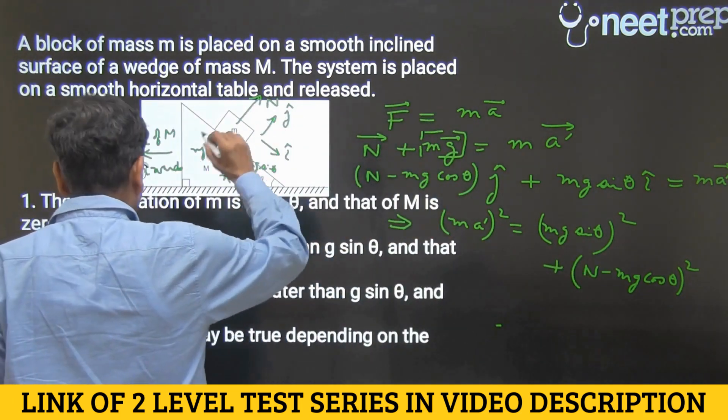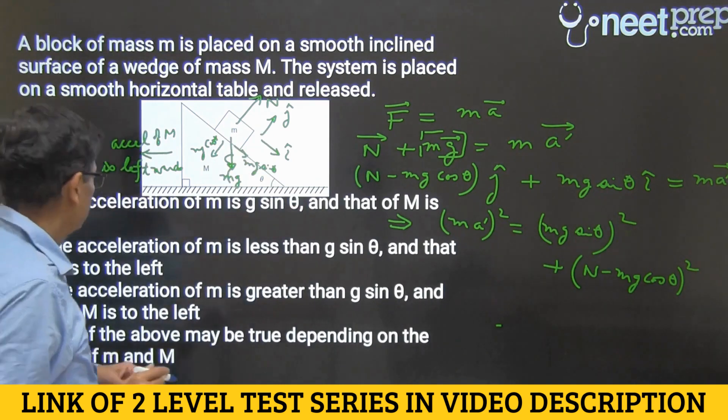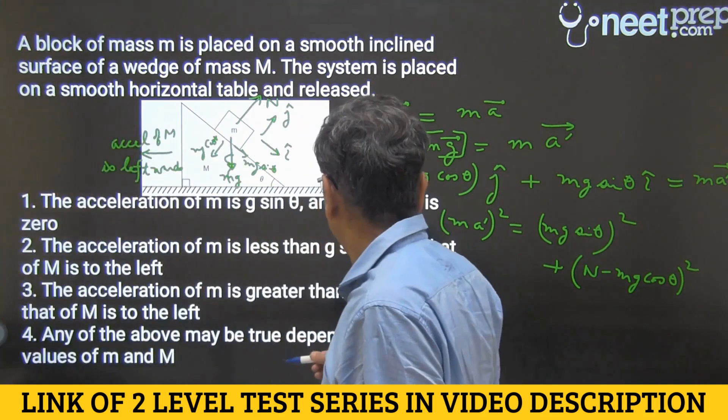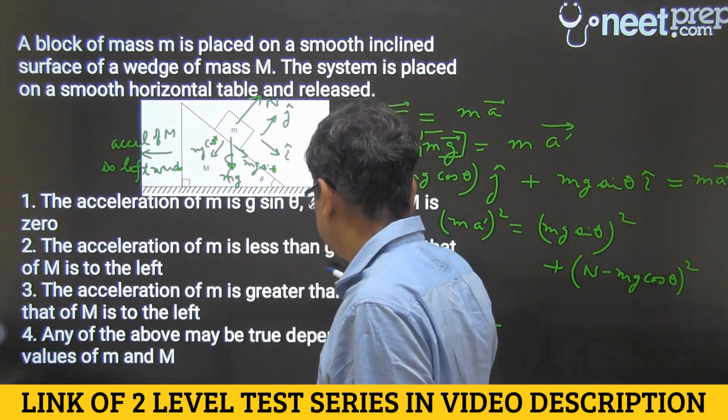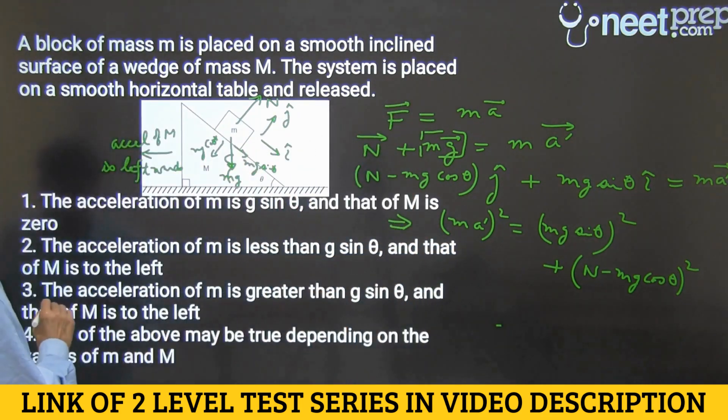So acceleration of block m would be greater than g sin theta and acceleration of capital M is towards left. And so option three - acceleration of m is greater than g sin theta and that of M is to the left -